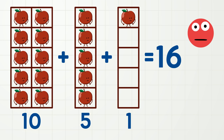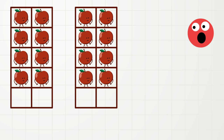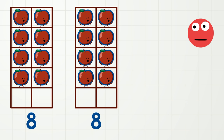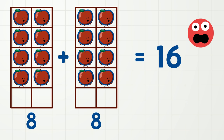Let's try again — apples, move! Now we have one, two, three, four, five, six, seven, eight apples over here, and the same number of apples over there! Eight plus eight is 16! So the number 16 can also be made up of the numbers eight and eight!